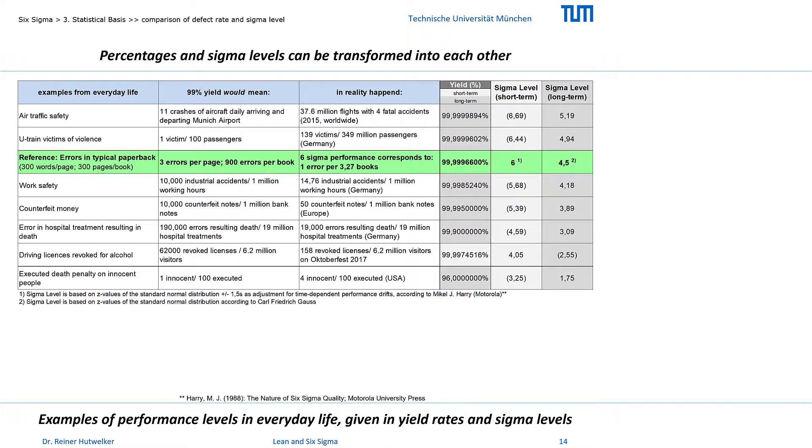To give you an impression of the relative proportions of percentages and sigma levels, I researched the defect rates for a few everyday examples and converted them into sigma levels. However, these are not statements about process capability, as no specification limits are considered. It is only a conversion of percentage values into Z values of the standard normal distribution. And strictly speaking, this is not allowed either, because defect rates are not and cannot be normally distributed. More about this later in the measure phase. Nevertheless, I would additionally like to briefly explain the difference between short-term and long-term sigma using these examples.